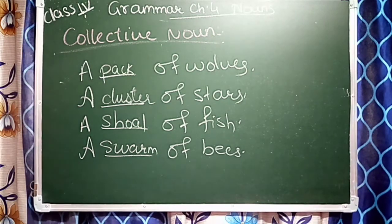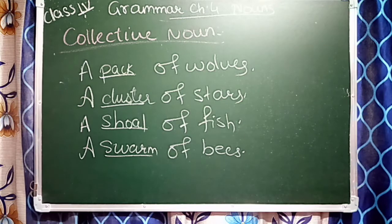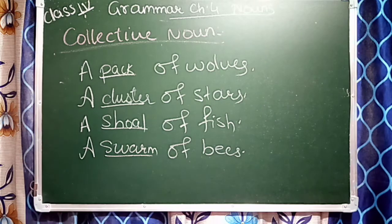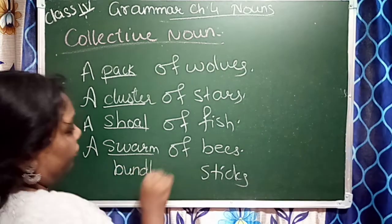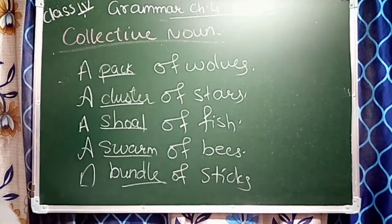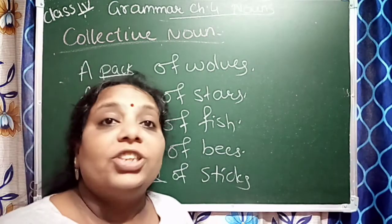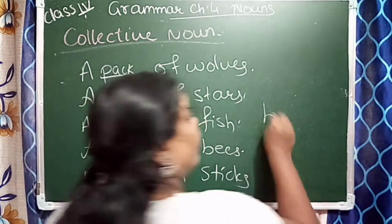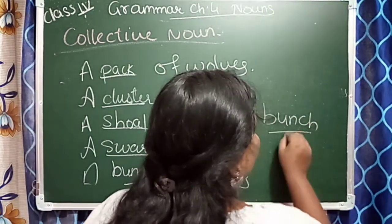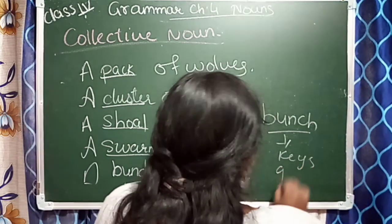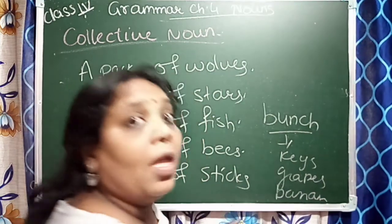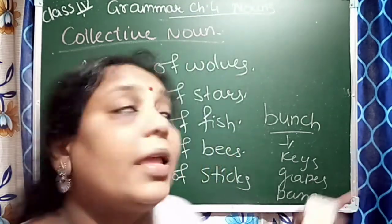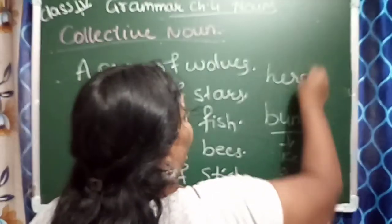देखो, अभी मैंने इसमें एक-एक का बताया है। Wolves के लिए pack of wolves। यहाँ sticks है, तो a bundle of sticks — we won't say a group of sticks, हम बोलेंगे bundle of sticks। A dash of grapes — bunch of grapes। Grapes, bananas के लिए bunch आता है। Cows का हम बोलेंगे herd of cows — h-e-r-d, herd of cows।